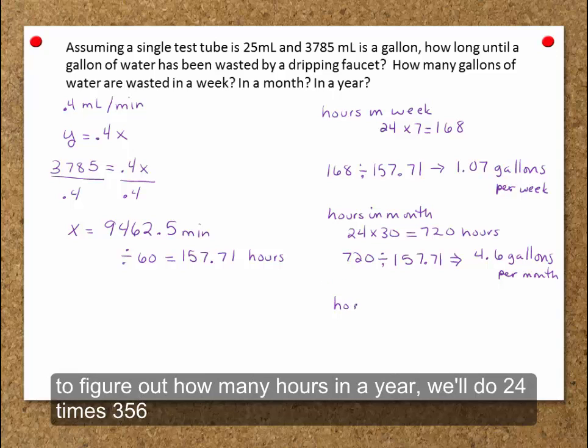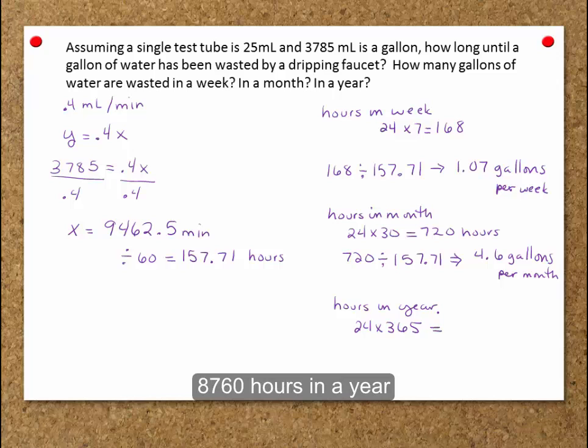And if we want to figure out how many hours in a year, we'll do 24 times 365. 8,760 hours in a year.